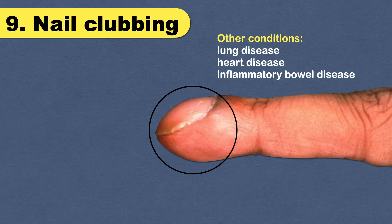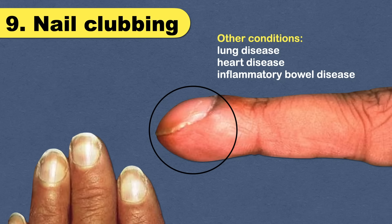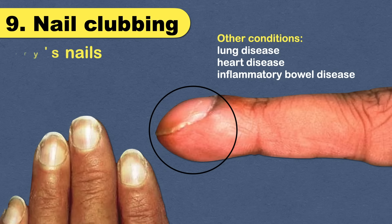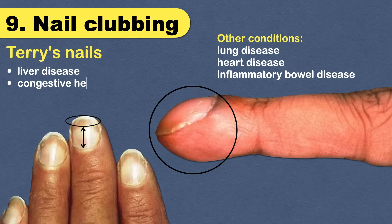Another important sign is Terry's nails, in which most of the nail appears white except for a narrow pink band at the tip. It can be a sign of serious underlying conditions such as liver disease, congestive heart failure, kidney failure, or diabetes.